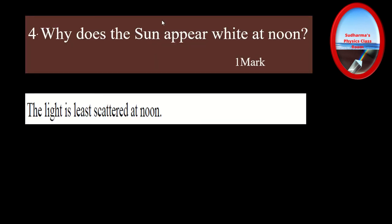Question number four is: why does the sun appear white at noon? It is a one-mark question. In CBSE evaluation, keywords are important — if the keyword is not there, you will not get any mark. The key word here is 'scattering.' During noon time, the light is least scattered — that is the answer you are expected to write.